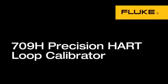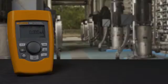The Fluke 709 loop calibrators are a new, easy-to-use family of accurate and dependable loop calibrators. The 709 is a precision loop calibrator and the 709H adds HART communication.